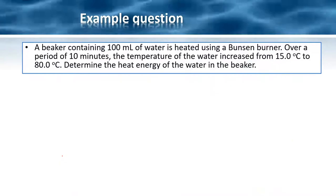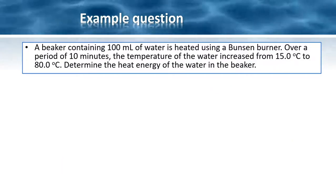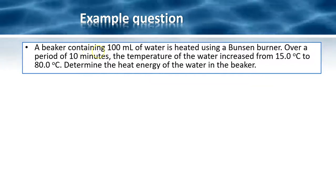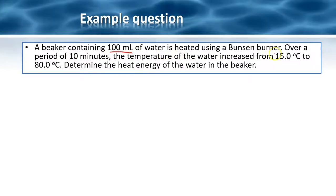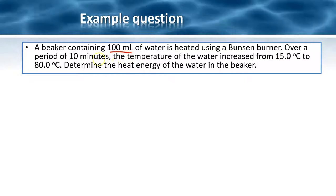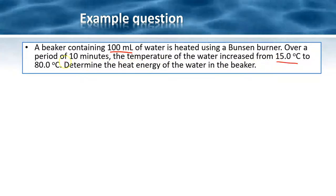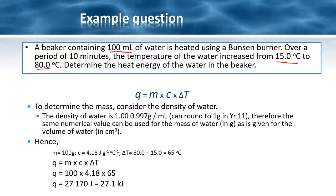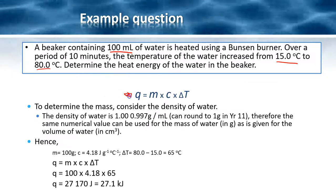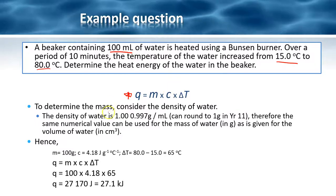Let's have a look at another question. A beaker contains 100 milliliters of water, is heated using a Bunsen burner. Over a period of 10 minutes, the temperature of the water increased from 15 degrees to 80 degrees. Determine the heat energy of the water in the beaker.